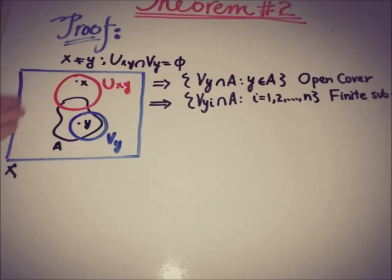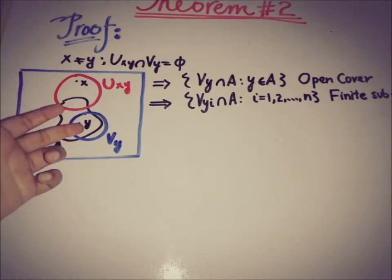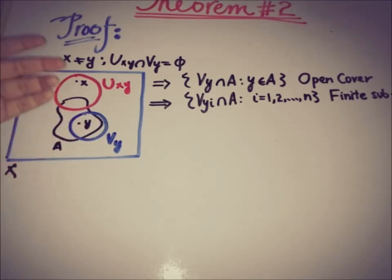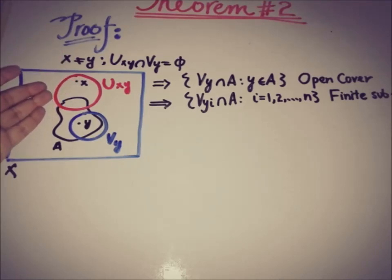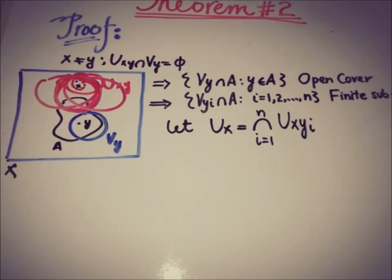For each element we pick in A, there is a corresponding open set in the complement side containing x. So we have finitely many open sets U_{x,y_i}, and the rough sketch of all these U_{x,y_i}'s is shown here.